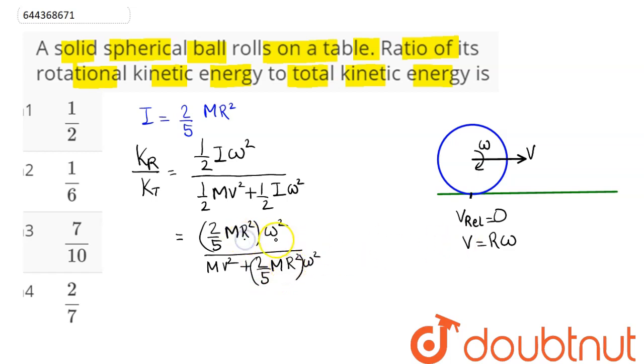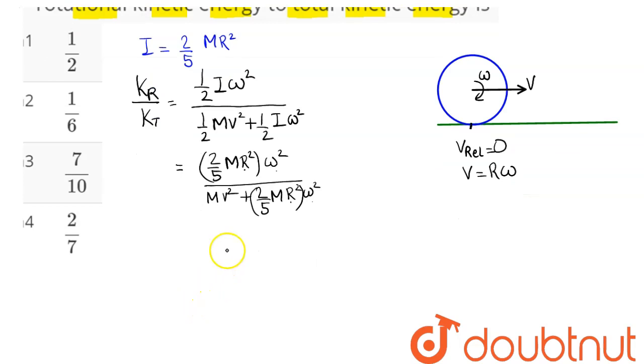Taking mr²ω² from the numerator and denominator common and cancelling out, hence this ratio becomes 2/5 divided by in the denominator we have 1 plus 2/5, so this ratio comes out to be 2/5 divided by 7/5.